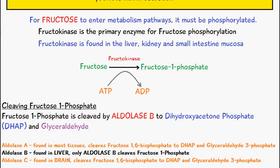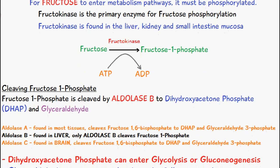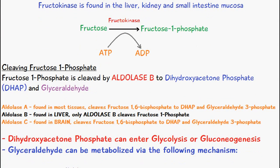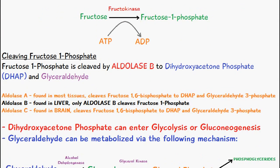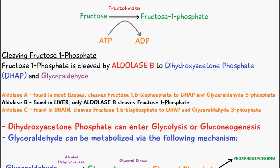Once we have fructose-1-phosphate, it must be cleaved by aldolase B to form trioses known as dihydroxyacetone phosphate and glyceraldehyde.